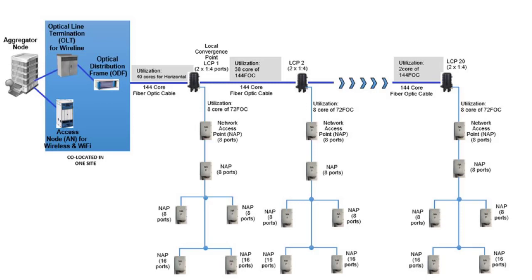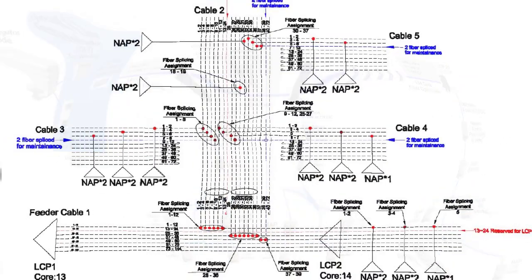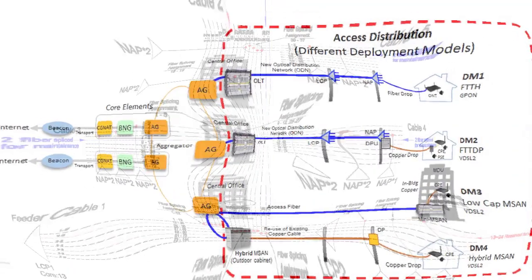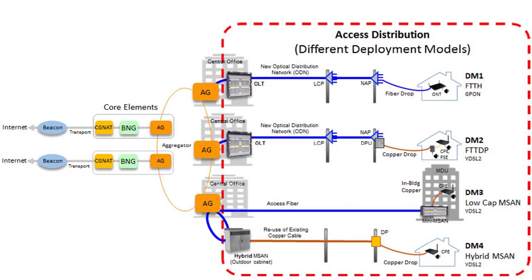On the exchange side, there is a 144-port ODF from which the 144-core feeder cable is terminated. LCP takes a single core out from the feeder cable and splices to a 1-4 splitter. The 4 pigtails out of the LCP will then splice to 4 cores among a 72-core distribution cable linking each NAP box. Out of that 4-core split from the LCP, 1 core will be spliced to a 1-8 splitter inside the NAP. For every 1 LCP, it can light up 4 units of 8-port NAP box.